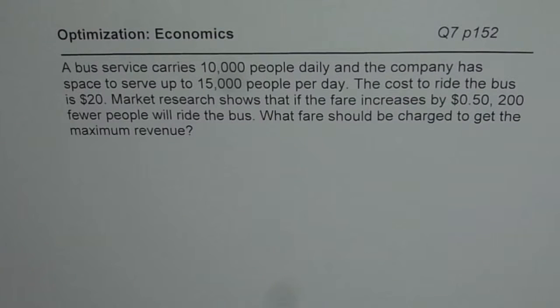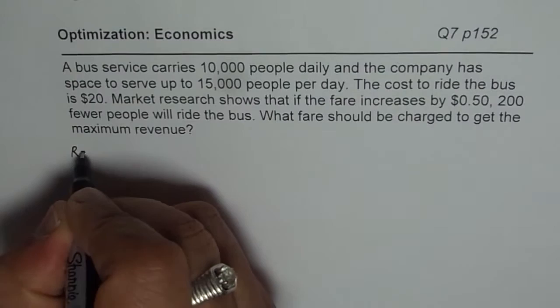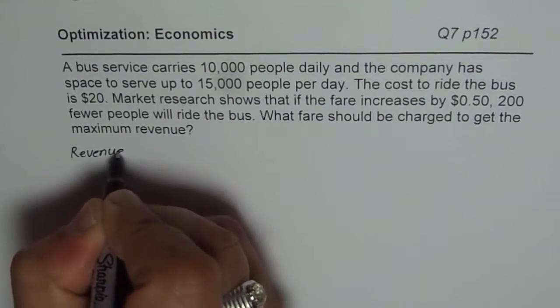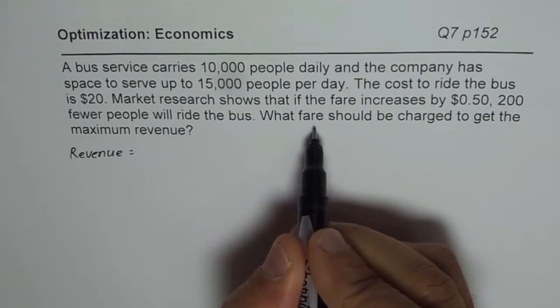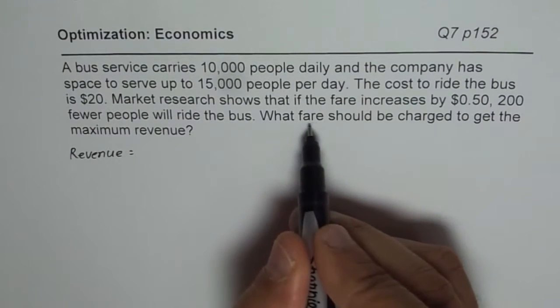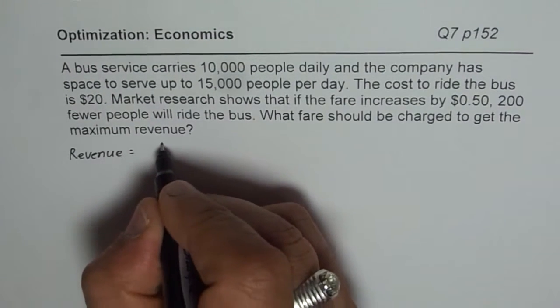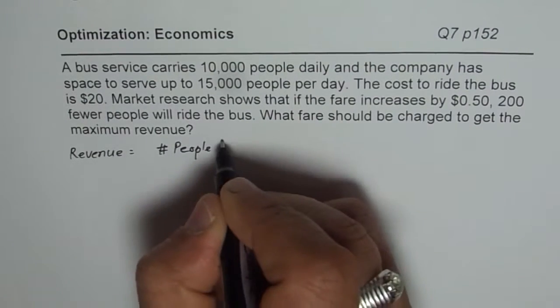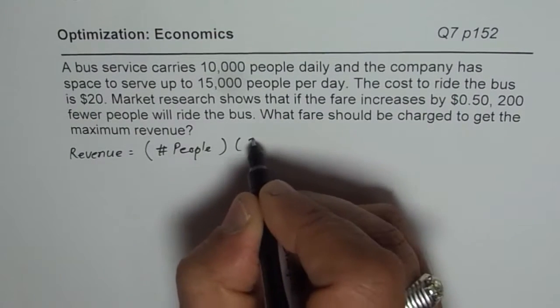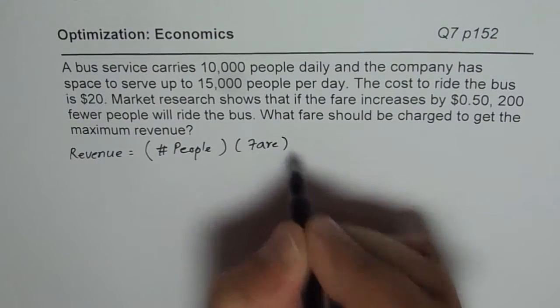Now these types of questions are very common in test papers and therefore I have taken up this question from the book. Now here we are talking about revenue and you know revenue is what? Revenue in this case will be fare and the number of people. So these are the two things. So we can say revenue is number of people traveling times the cost or the fare. So that is the two things.